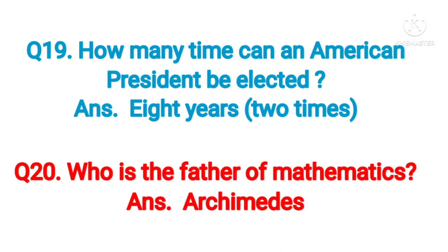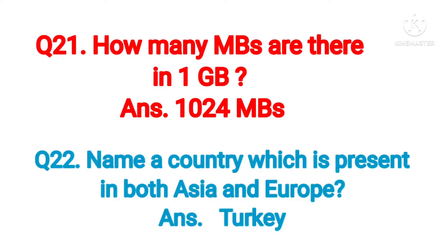Question number nineteen: how many times can an American president be elected? Answer: two times, eight years. Question number twenty: who is the father of mathematics? Answer: Archimedes.